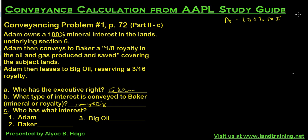Adam then conveys to Baker a one-eighth royalty. Let's look at this language — this is what they were testing you on in A and B. It's a one-eighth royalty in the oil and gas produced and saved. That is not the conveyance of a mineral interest; that is only the conveyance of a royalty interest. If it were minerals, it would say 'oil and gas in and under.' So he's only conveying a one-eighth royalty.